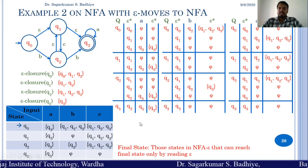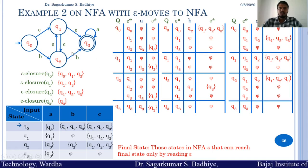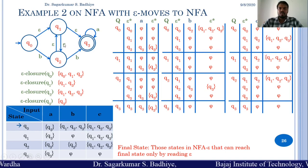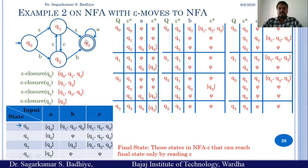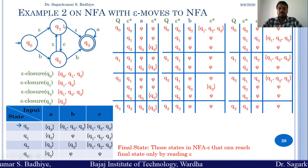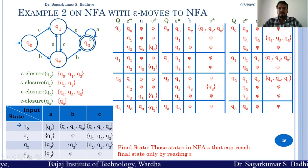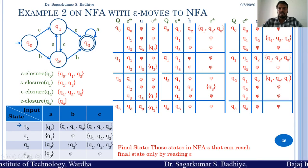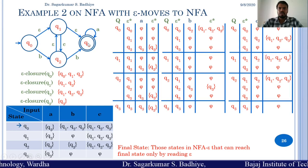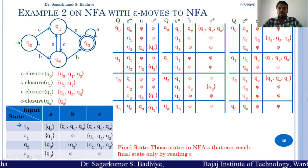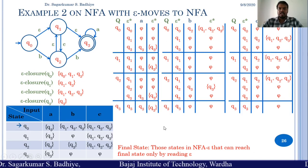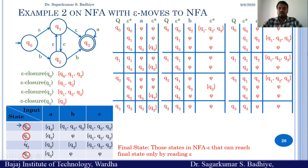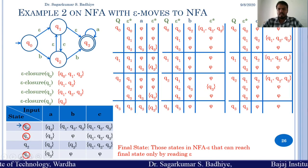Final states are to be decided. Final states are those states from which you can reach a final state only by reading epsilon. From Q0 by reading epsilon you can go to Q1, and from Q1 on reading epsilon you can go to Q3. Similarly from Q2 you can go to Q1 and from Q1 to Q3 by reading just epsilon. So all the states Q0, Q1, Q2, and Q3 will be the final states in this equivalent NFA.